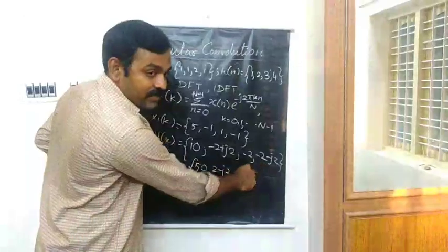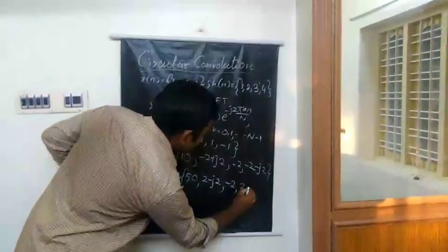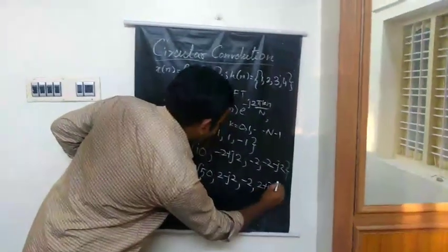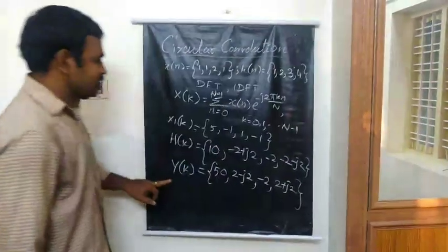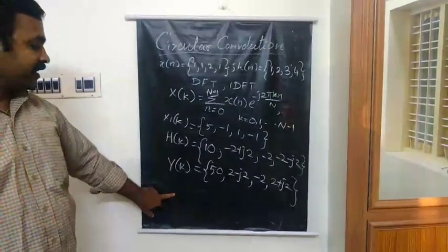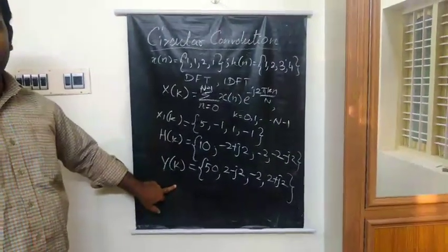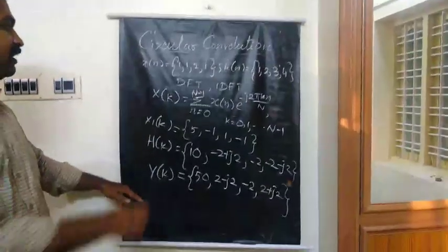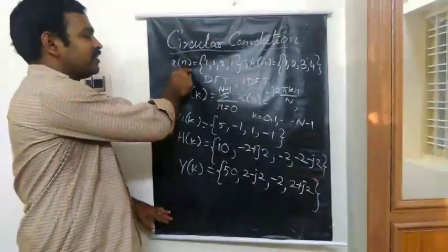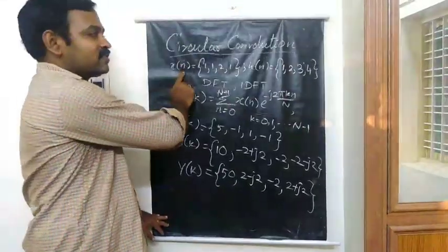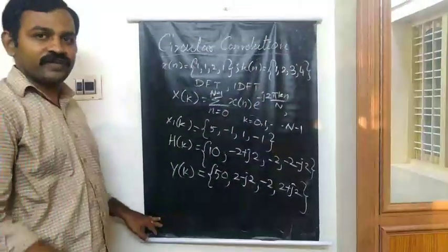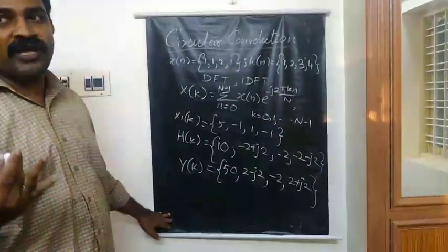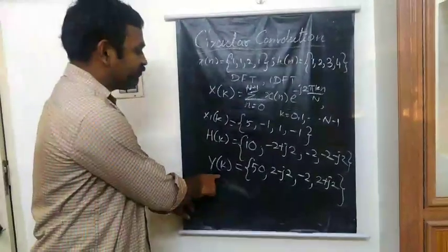Then minus 1 multiplied by this one, so 2 plus j2. So this is the output in the frequency domain Y of k. We have the time domain X of k as well as H of k, now we have the required output Y of k. Therefore, you apply Inverse Discrete Fourier Transform.